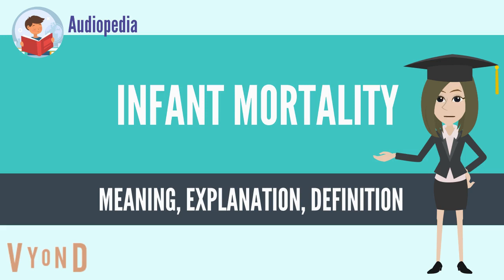Child mortality is the death of a child before the child's fifth birthday, measured as the under-5 child mortality rate (U5MR). National statistics sometimes group these two mortality rates together. Globally, 9.2 million children die each year before their fifth birthday, and more than 60% of these deaths are seen as being avoidable with low-cost measures such as continuous breastfeeding, vaccinations, and improved nutrition.